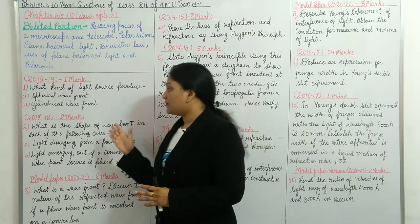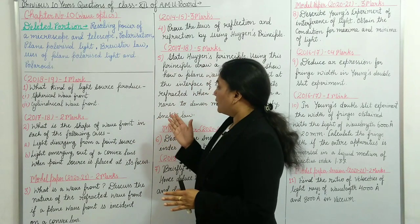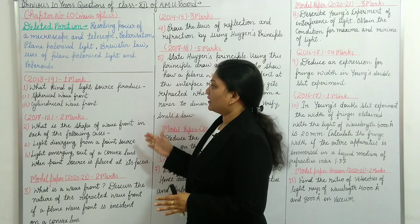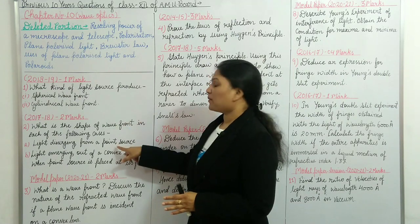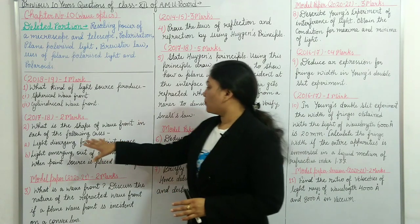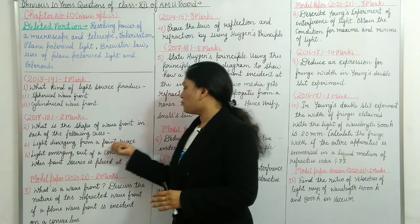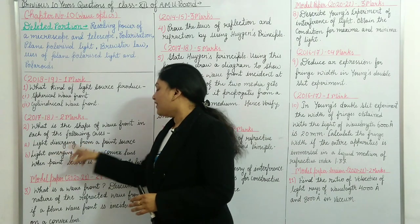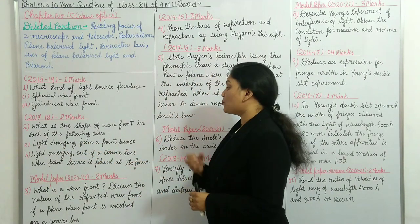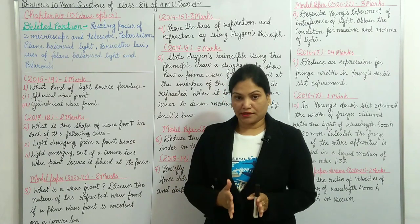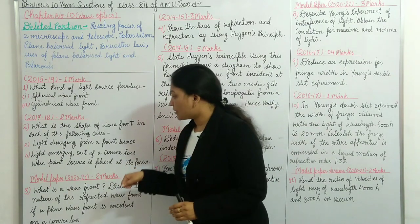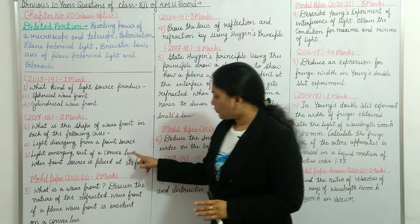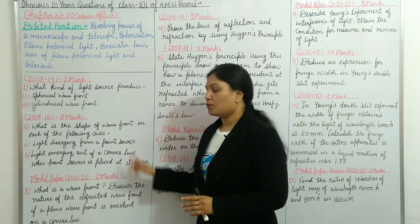Question number two asks about the shape of the wavefront in the following cases. First, light diverging from a point source — that will give a spherical wavefront. Second, light emerging out of a convex lens when a point source is placed at its focus. This question appeared in the model paper 2021 for two marks.